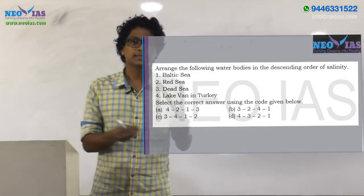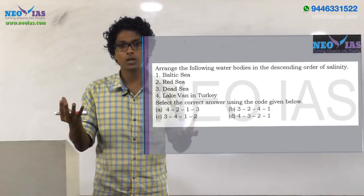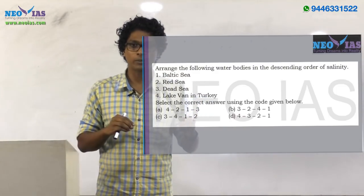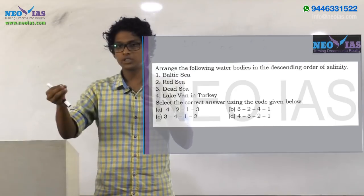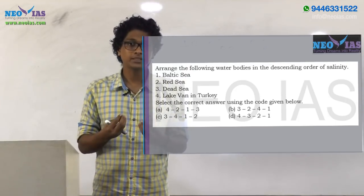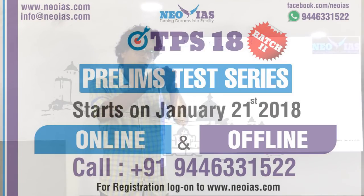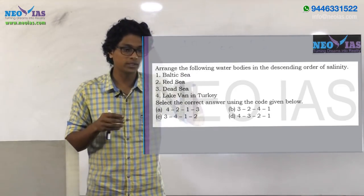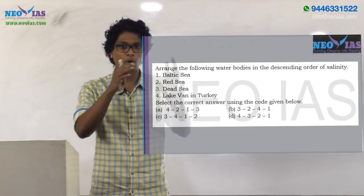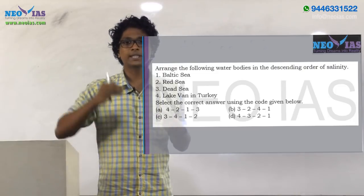Certain factors influence salinity. Imagine two bowls of water — one boiling and one at room temperature. Adding one tablespoon of salt to both, the boiling water dissolves it faster. So temperature matters: warmer water dissolves salt faster. Similarly, if a bowl of salt water is left in sunlight and water evaporates, the remaining water has less water but the same amount of salt — so salinity increases.